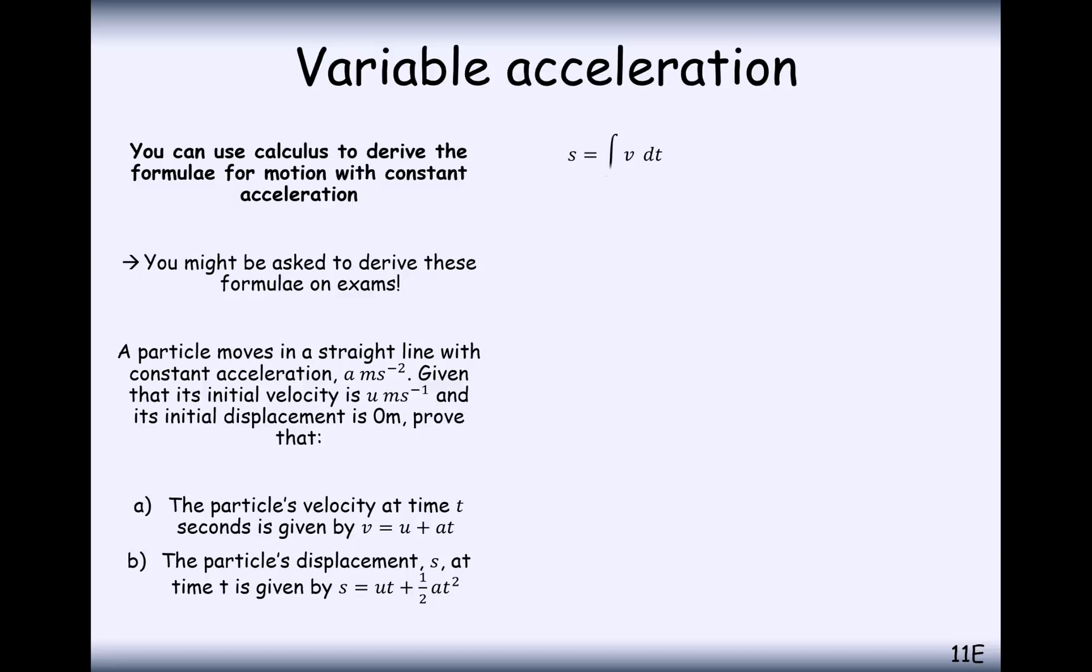Okay, we should be able to carry on further from here. So integrating velocity now with respect to time will give us displacement. Now remember previously we've shown that V equals U plus A T. So substitute in U plus A T. And remember U and A here are just numbers, something like 3 plus 5T or something like that.